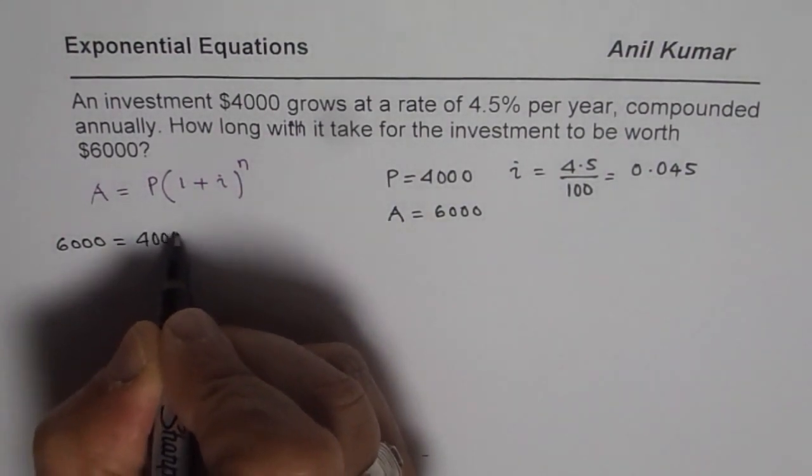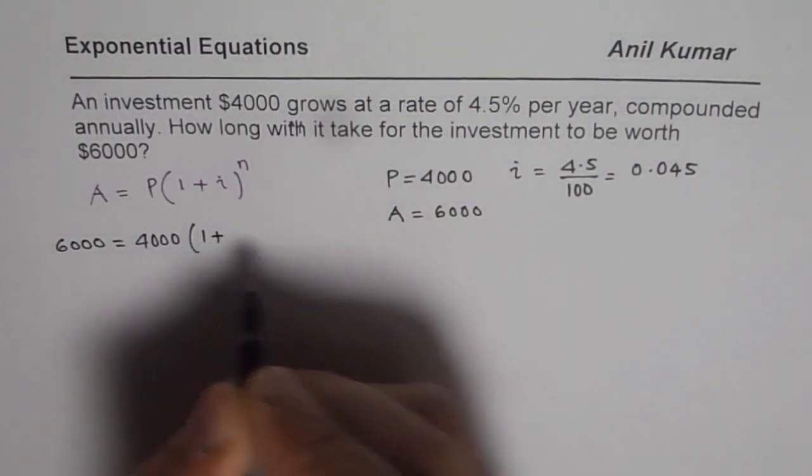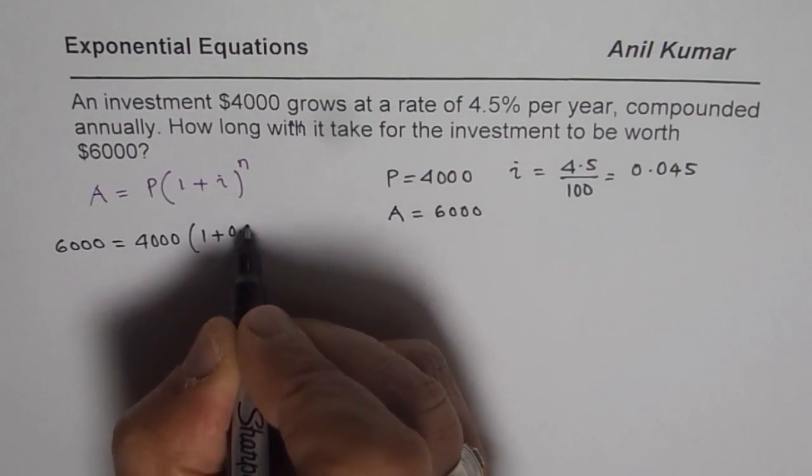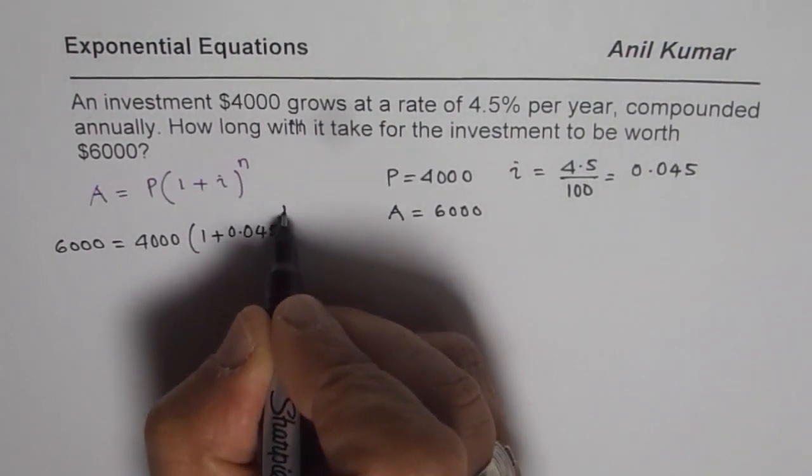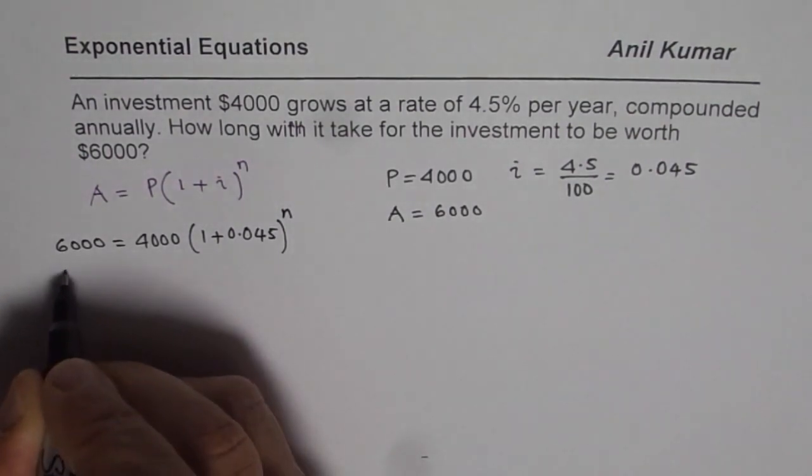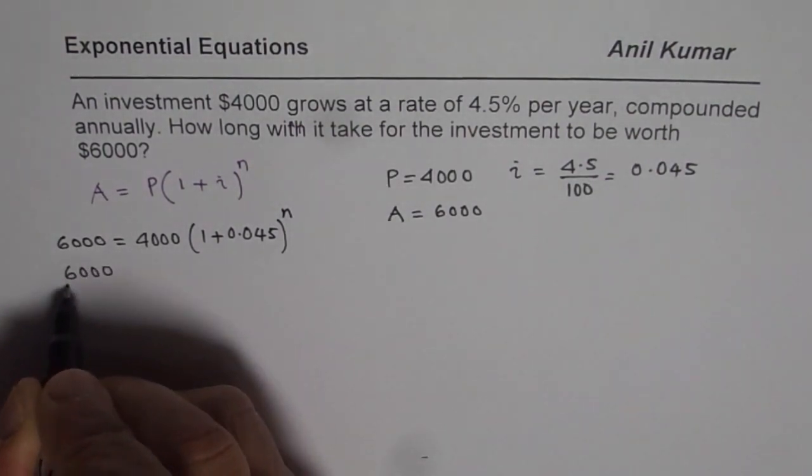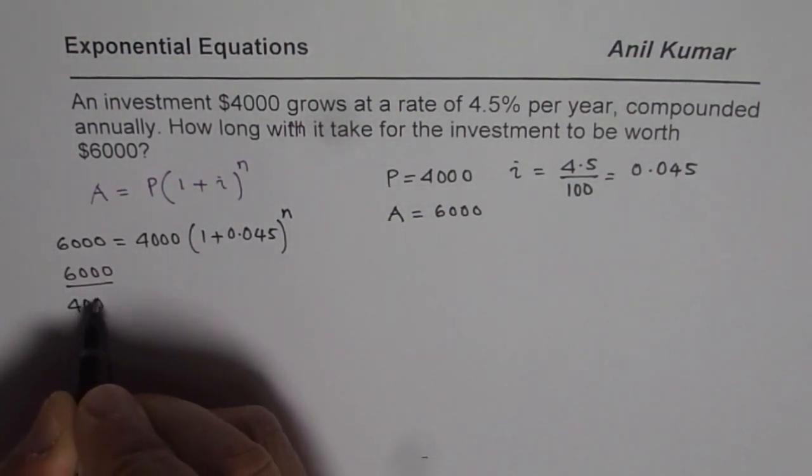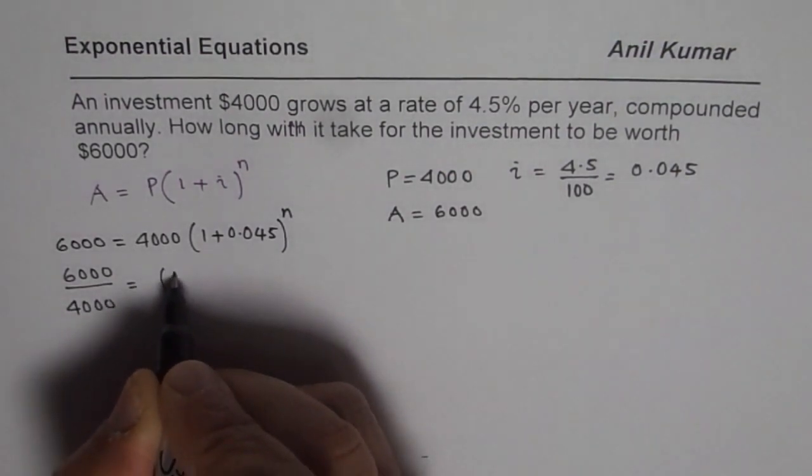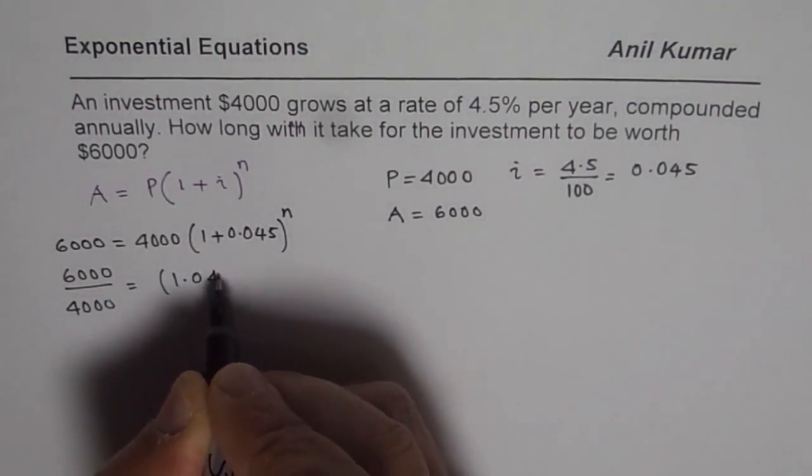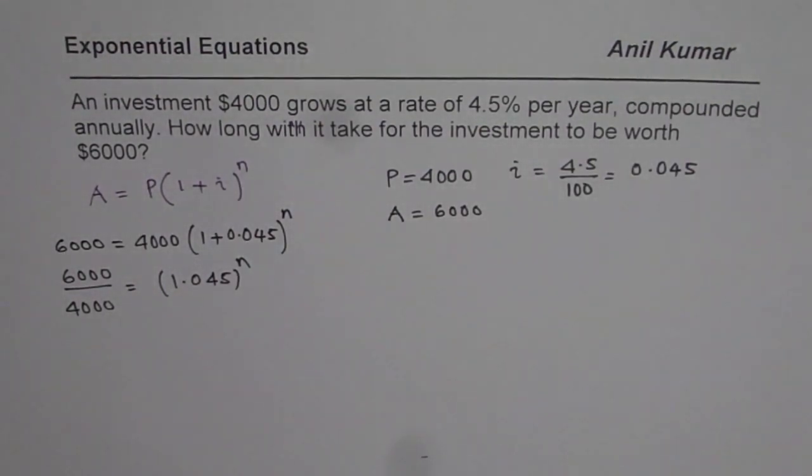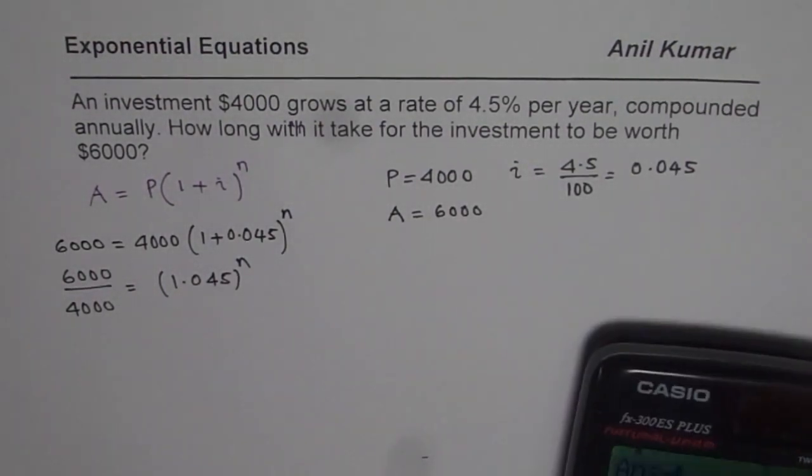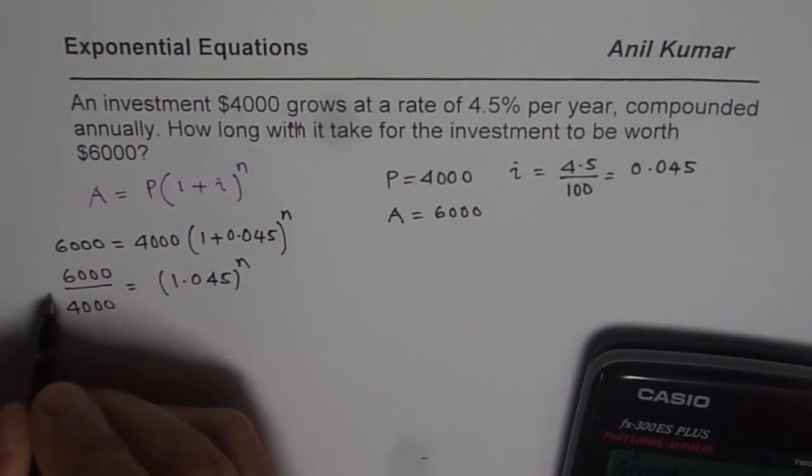So we have $6000 equals $4000 to start with times (1 plus 0.045) - that is 4.5% - to the power of n. You can now divide 6000 by 4000 and what we get here is (1.045)^n. We can simplify this - dividing we get 3/2 or 1.5.